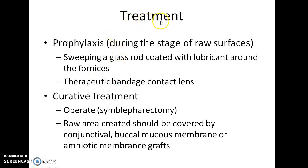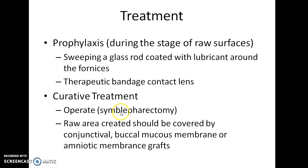Treatment of symblepharon includes prophylaxis — prevention during the stage of raw surfaces — which can be done by sweeping a glass rod coated with lubricant around the fornices and by using therapeutic bandage contact lenses. Curative treatment includes symblepharectomy, an operation done to remove symblepharon. The raw area created during the operation should be covered by conjunctival, buccal mucous membrane, or amniotic membrane grafts.